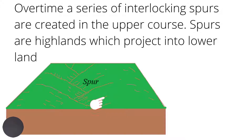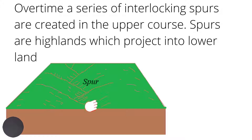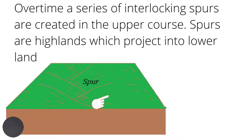A spur itself is similar to a headland that we find along the coast. The headland is a highland that projects outwards to the sea. When it comes to a spur, the spur is found inland and is also highland, but in this case it is jutting or projecting outwards to lower land, and this lower land is usually the river valley.